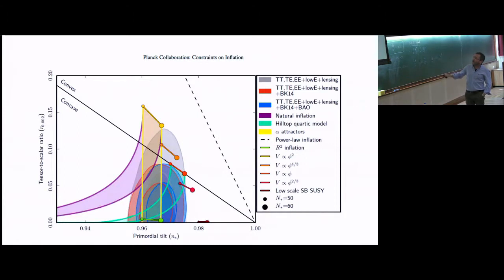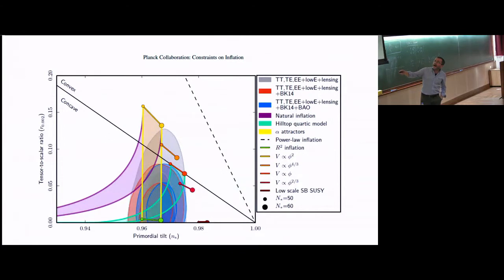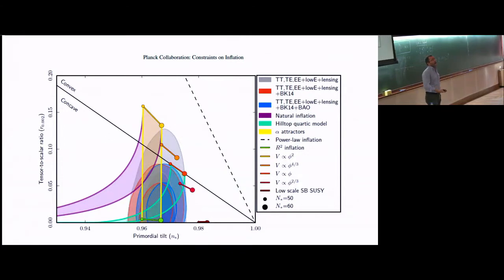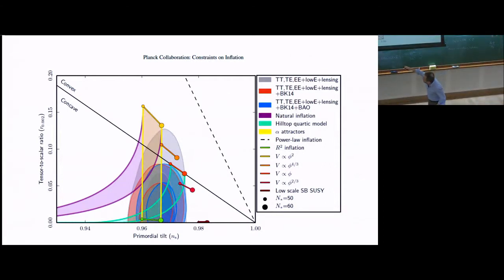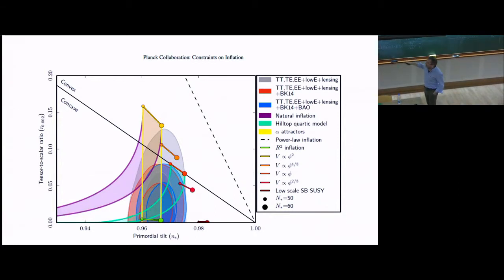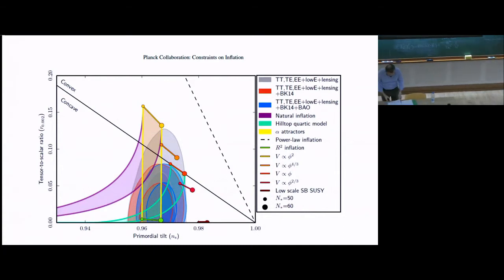Don't get too confused: this plot is suited for large-energy models. If epsilon is 10⁻⁸, all those models are squashed on the horizontal line. It's very nice that we're ruling out these models, but this doesn't mean we're running out of possibilities. There is a whole class of small-field models squashed on this horizontal line, and I don't know what to check there. We shall see.